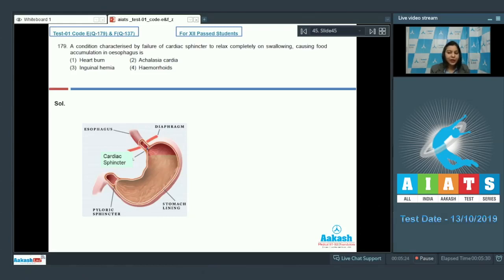First of all, we have a look at this diagram and the positioning of the cardiac sphincter. The cardiac sphincter is present at the opening of esophagus into the stomach. In case this cardiac sphincter fails to relax, the contents of esophagus will not be able to pass in the stomach. That is, there will be accumulation of these contents in the esophagus itself. So this condition where the contents of esophagus are not able to pass because of failure of relaxation of cardiac sphincter is known as achalasia cardia.